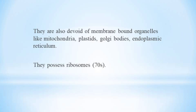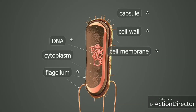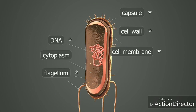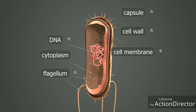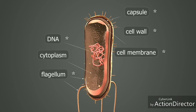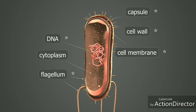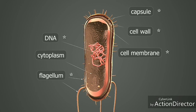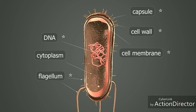Bacteria possess numerous ribosomes which are of the 70S type. Bacteria do not have a nucleus but have genetic material such as DNA concentrated near the center region of the cell, forming a nucleoid. Bacteria have a tough and rigid cell wall like plant cells, made up of peptidoglycan, which provides structural support and protection.